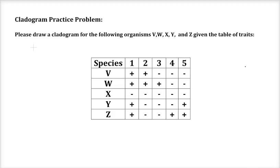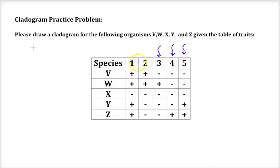Remember, a cladogram is just a hypothesis — it does not tell us exactly. It's based on observations from traits, whether from morphology or living species today. We use genetics, nucleotide sequences, or the types of proteins they use. By looking at traits that are common or uncommon, we can put together a possible linkage of how these species may have evolved.